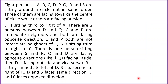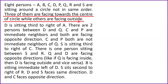This is the reference question — first we are going to solve this and then we'll answer the questions. Eight persons A, B, C, D, P, Q, R, and S are sitting around the circle, not in the same order. Three of them are facing towards the center of the circle while others are facing outside. I am going to underline these two lines and I'll tell you the reason later.